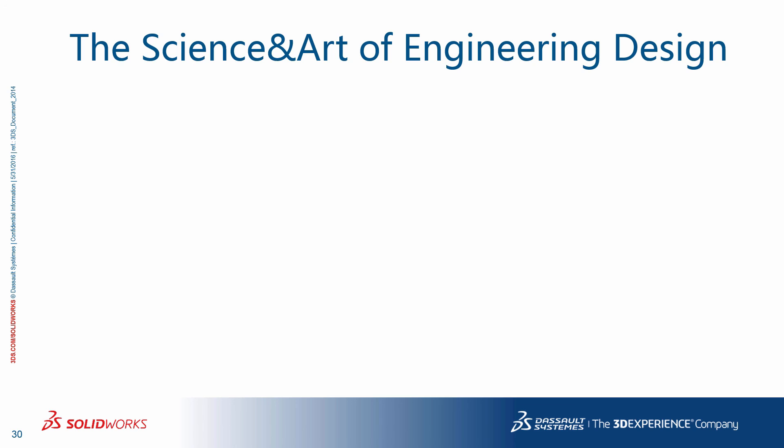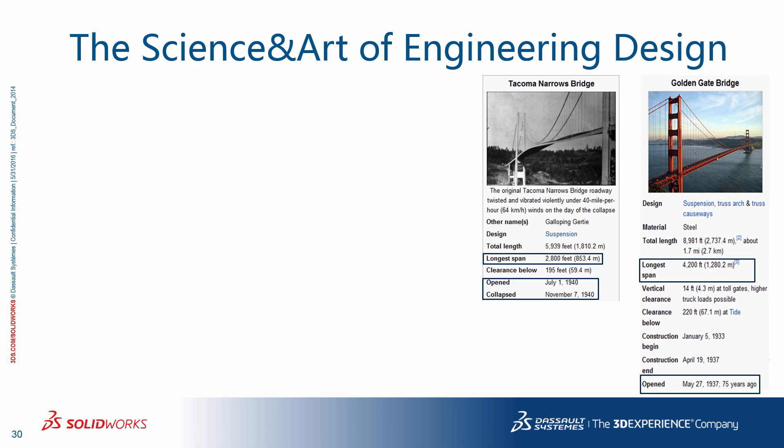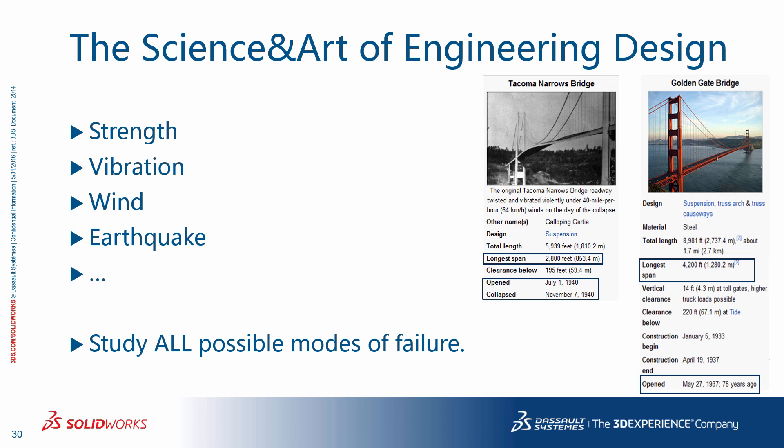As important as all the previously mentioned factors are, the science of the engineering design is the most important one of course. Your creation must fulfill its functional requirements under different, sometimes extreme circumstances. The original Tacoma Narrows Bridge, built in 1940, collapsed only a few months after its opening, vibrating violently under wind conditions. The Golden Gate Bridge here in the San Francisco Bay Area is still standing after almost 80 years. Both are suspension bridges, and the Golden Gate Bridge has a span 50 percent longer than the Tacoma Narrows Bridge. One big difference though is the additional truss structure in the Golden Gate Bridge. It is therefore incumbent upon the engineer to examine not just some, but all possible modes of failure, such as strength, vibration, wind, earthquake, and others for the bridge here. For these purposes, FEA simulation can be a powerful tool.